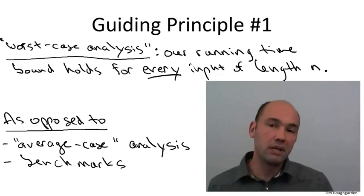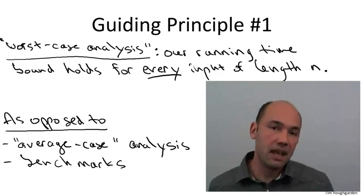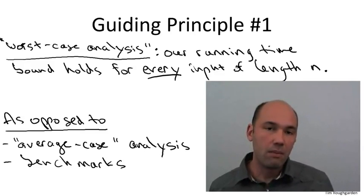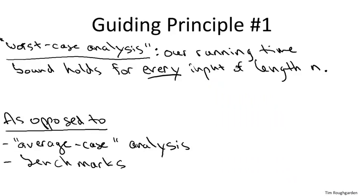By benchmarks, I just mean that one agrees up front about some set, say ten or twenty benchmark inputs which are thought to represent practical or typical inputs for the algorithm. Now, both average case analysis and benchmarks are useful in certain settings, but for them to make sense, you really have to have domain knowledge about your problem. You need to have some understanding of what inputs are more common than others, what inputs better represent typical inputs than others.